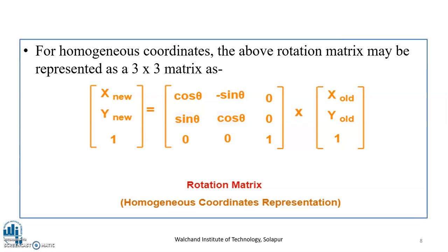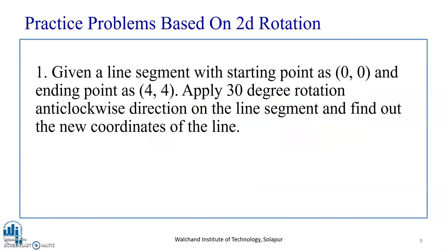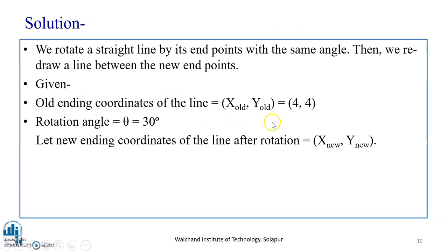After you have understood the representation of the rotation matrix, let us solve one practice problem based on 2D rotation. Here, given a line segment with starting point as 0, 0 and ending point as 4, 4. In the problem, a line segment from the origin with ending point 4, 4 is given. We have to apply 30 degree rotation anticlockwise direction on the line segment and find out the new coordinate. I hope the problem statement is crystal clear to you. How do we do this? We do this by applying the given matrix that we have seen.